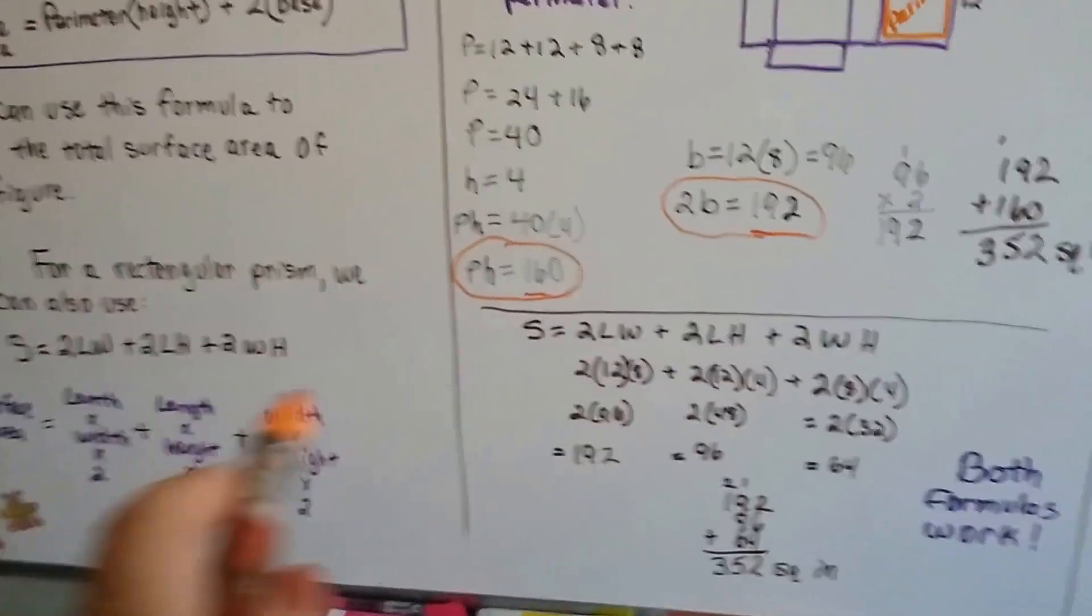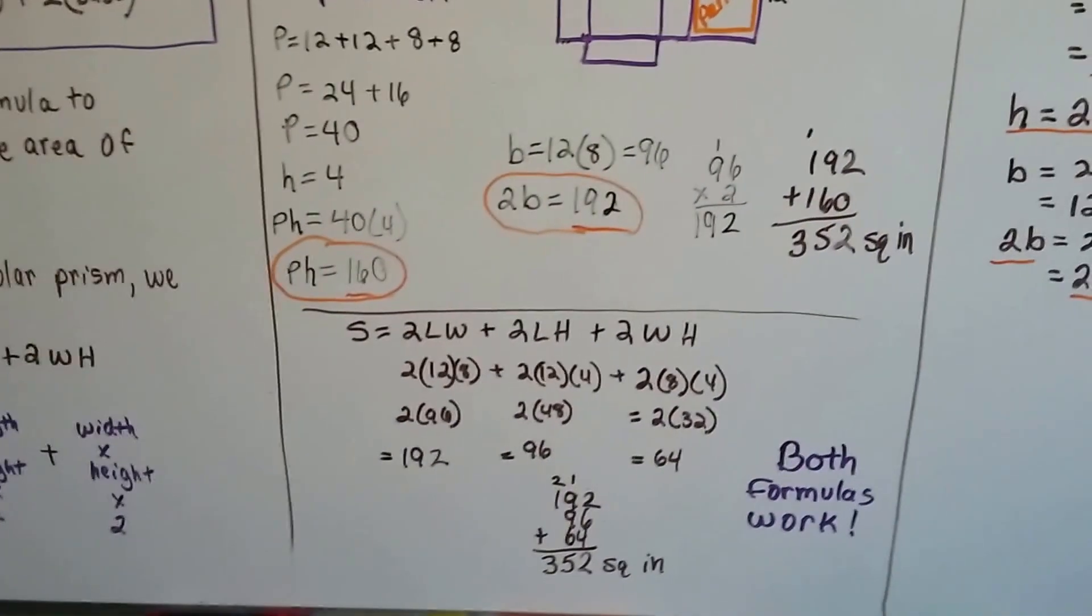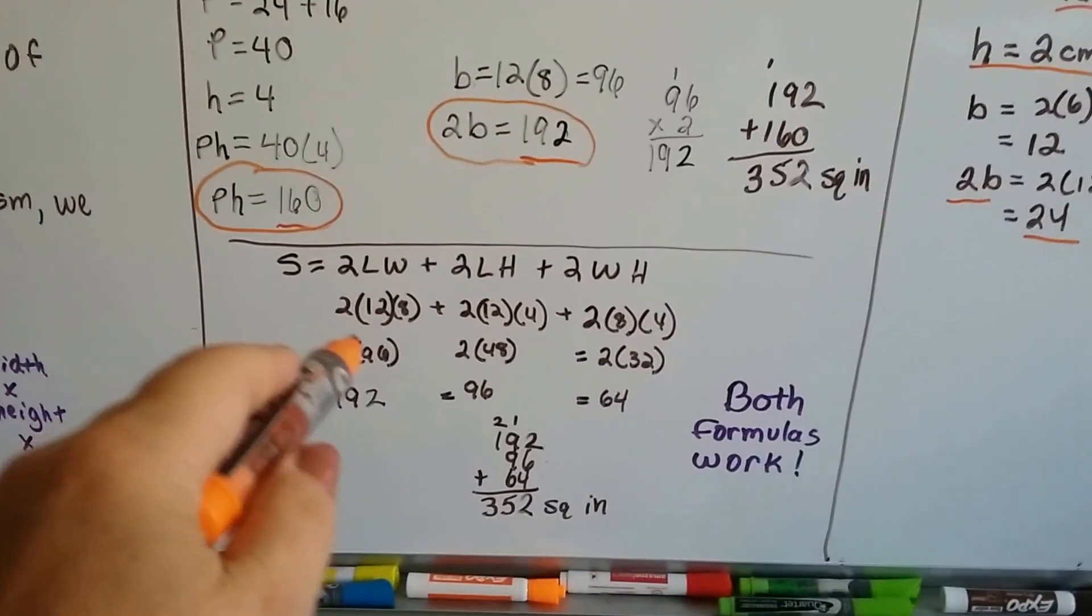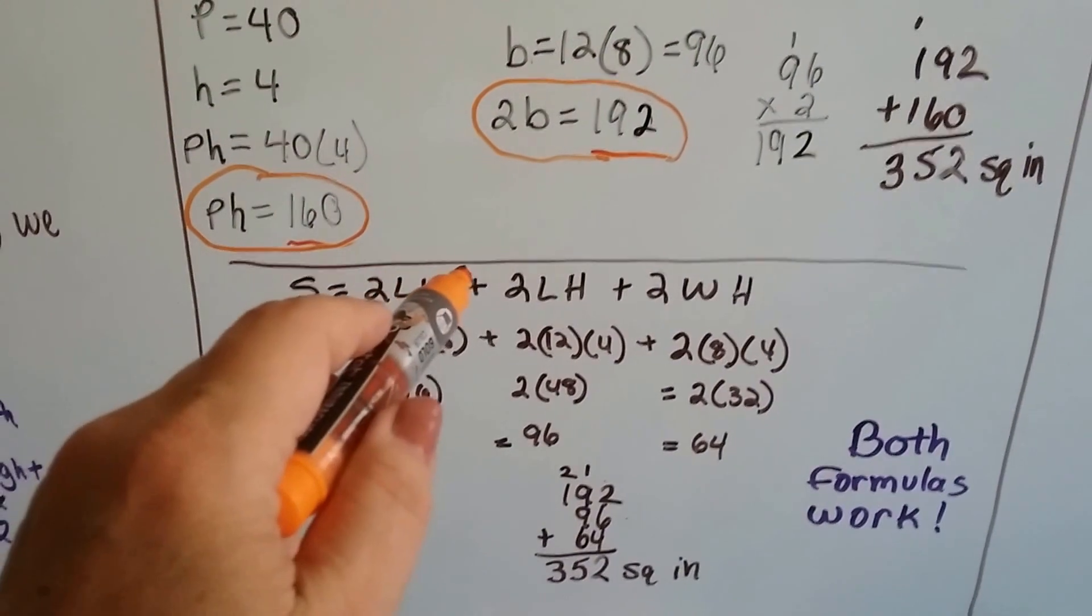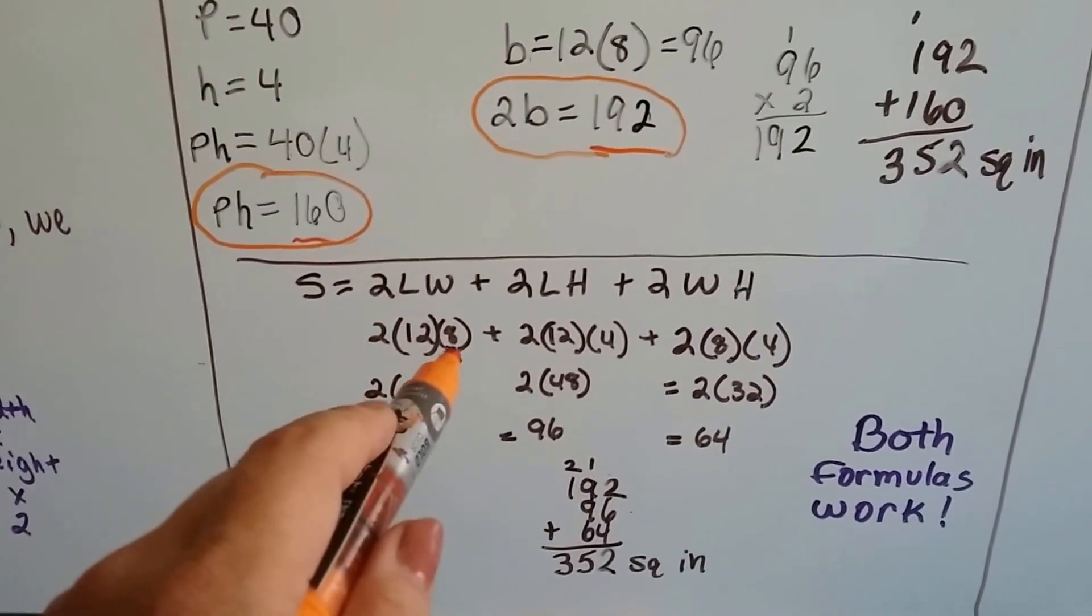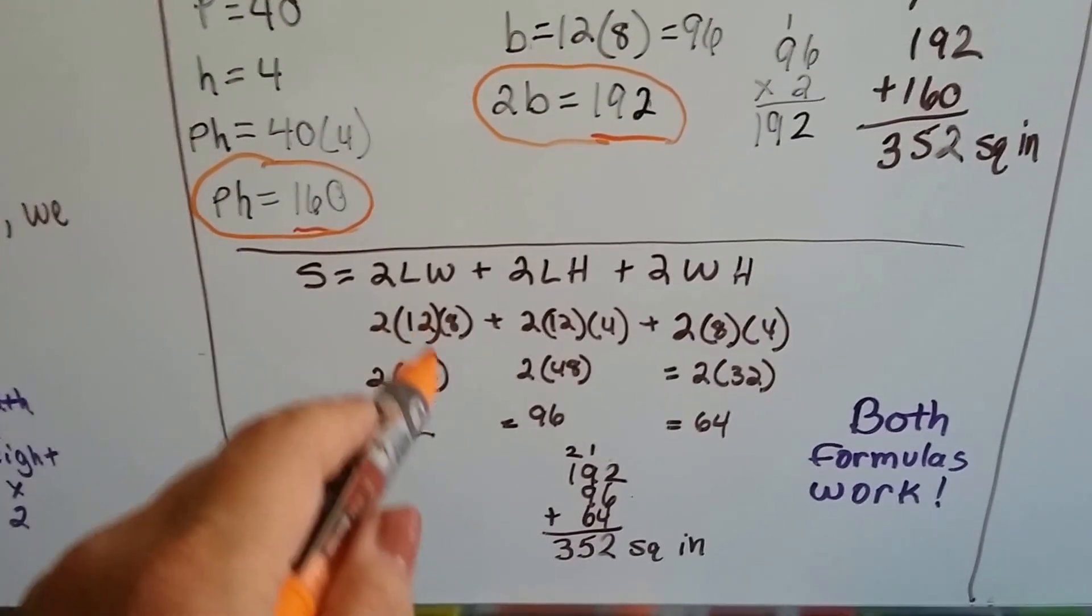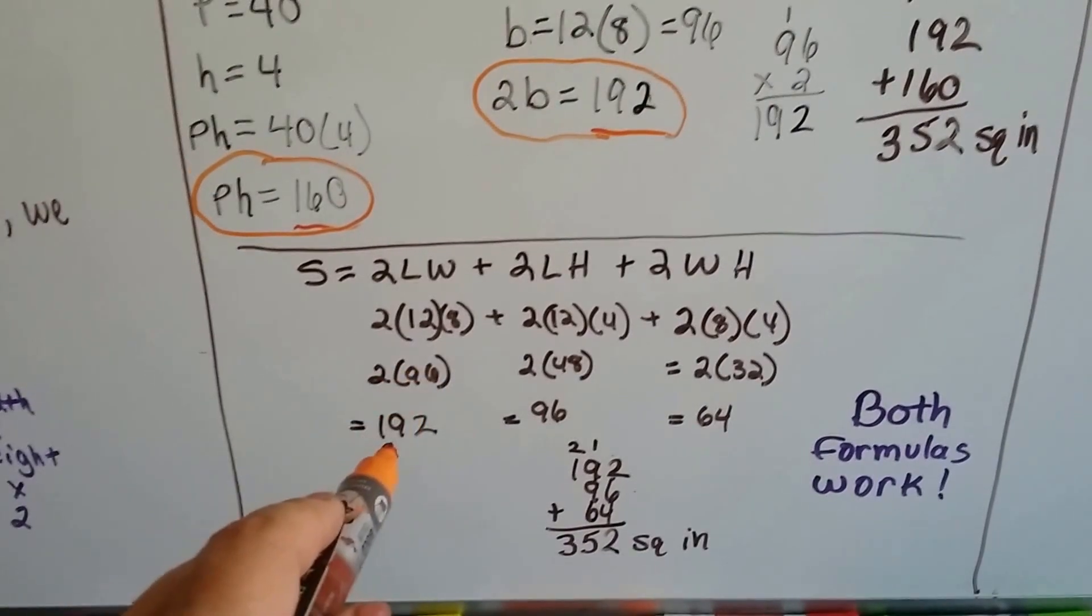Let's try this formula. I've recopied it here. Surface area is 2 length times width. The length was 12, and the width was 8, so that's 96. 2 times 96 is 192.